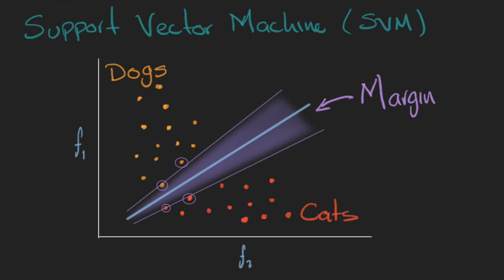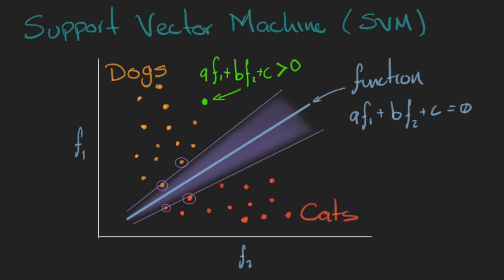Support vector machines will create a function, in our example a line, or a hyperplane in a higher dimensional space. So when we get a new instance, we just need to plug the features in the function. And if the result is positive, then we got a dog, and if the result is negative, then it is a cat.